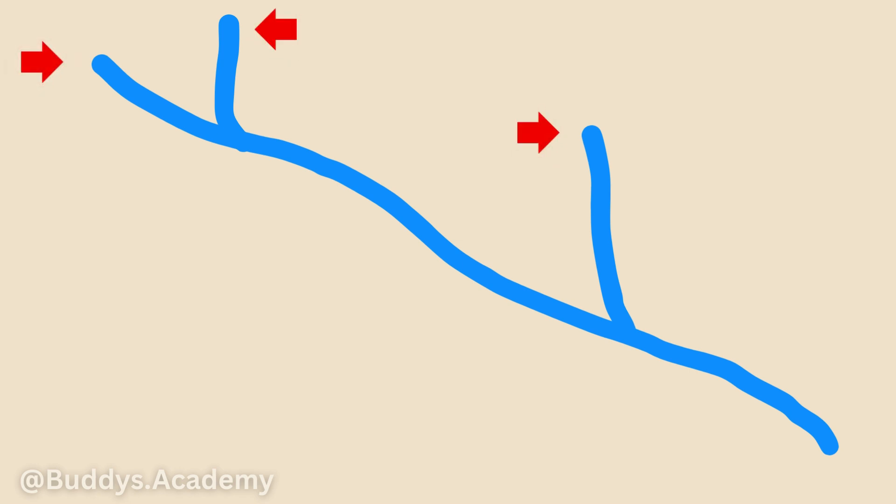We're going to start with the smallest streams — the ones with no tributaries. These are going to be your first order streams. All streams start off as first order streams, and the first order streams are not going to be fed by any other streams. As you can see in the diagram, the first order streams are not fed by any other stream, but they do feed into other streams. That is how you identify a first order stream.